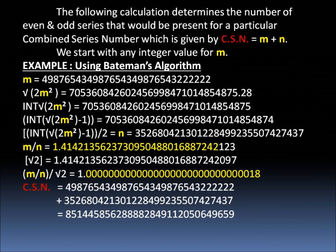The following calculation determines the number of even and odd series that would be present for a particular combined series number, which is given by CSN is equal to integer M plus integer N.